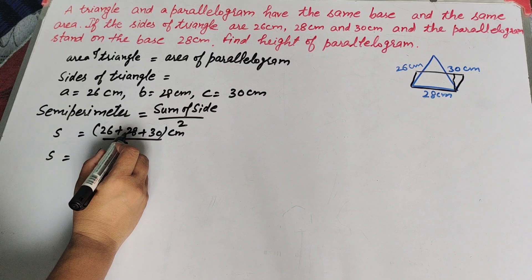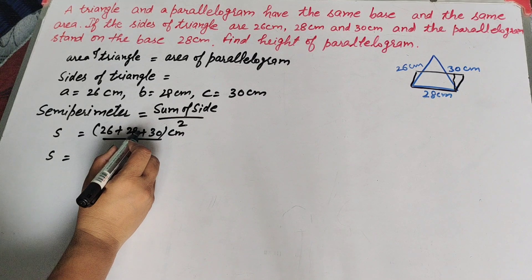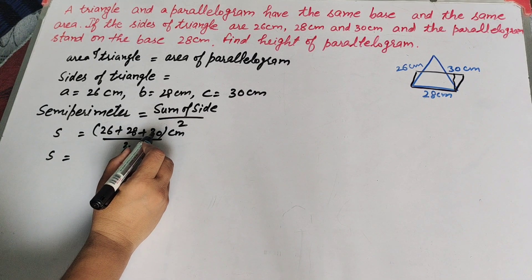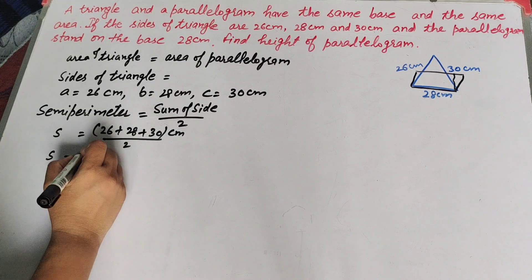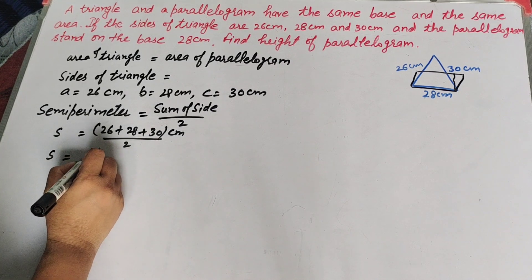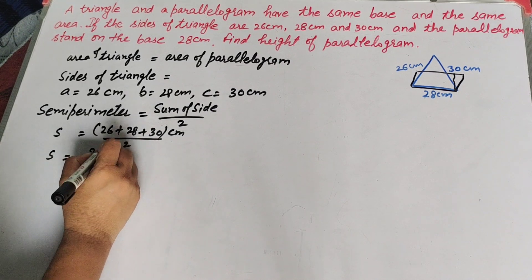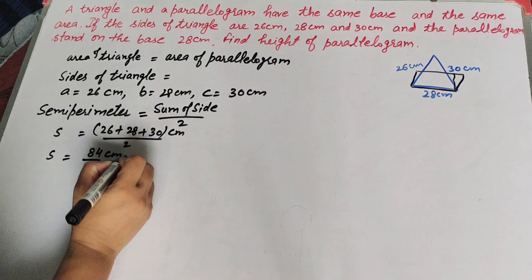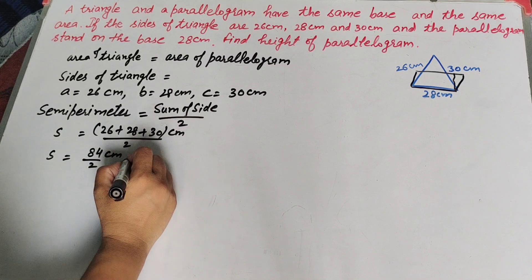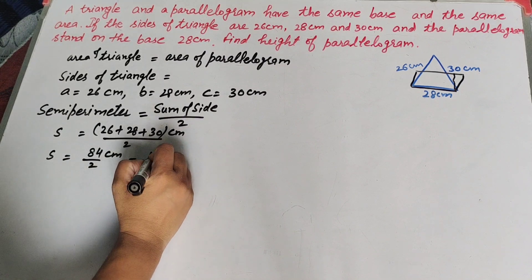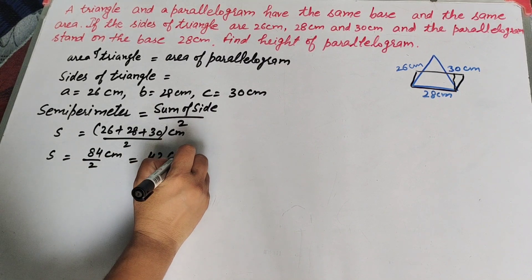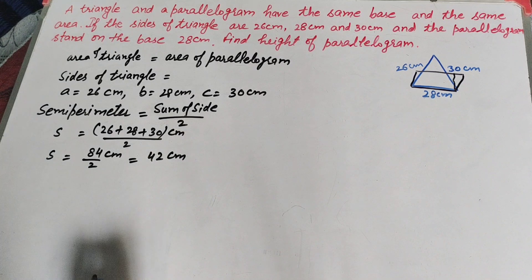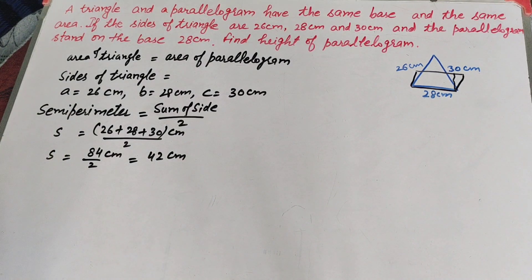Calculating the semi-perimeter: 26 + 28 + 30 = 84, and 84 divided by 2 equals 42 cm. So the semi-perimeter s = 42 cm.